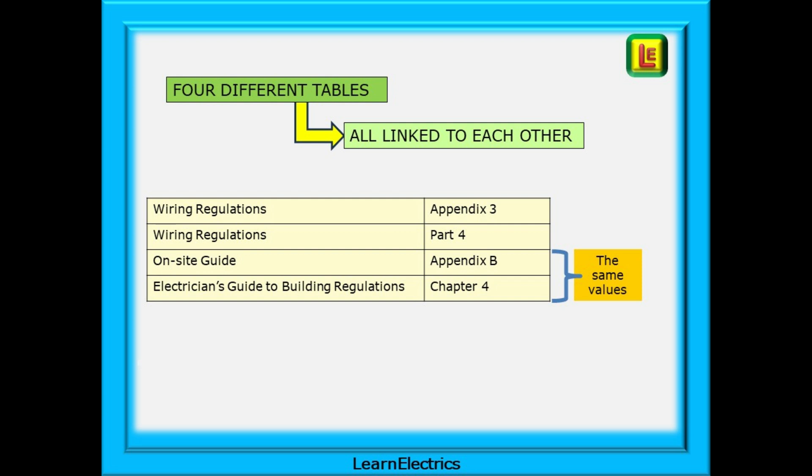The four books shown will all have ZS tables. This is where to find them in each publication. The on-site guide and the electrician's guide to the building regulations have the same tables, the same ZS values. So if we talk about the on-site guide we could just as easily be referring to the electrician's guide.